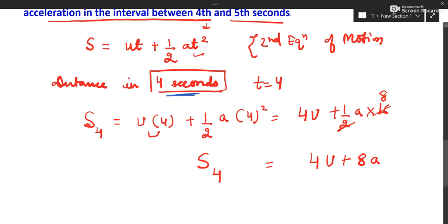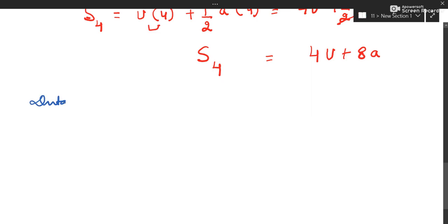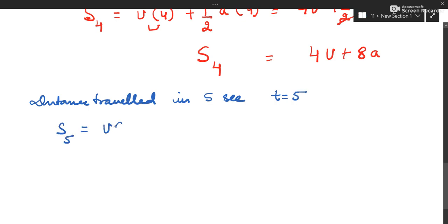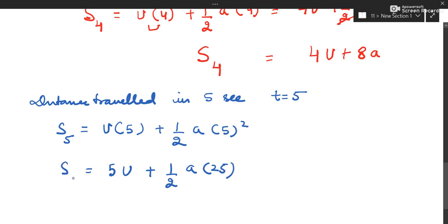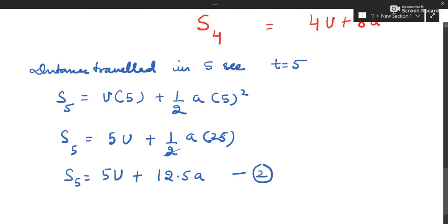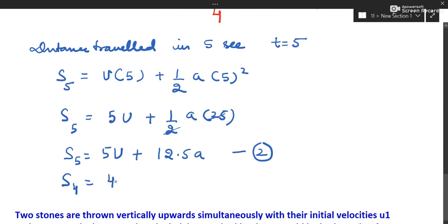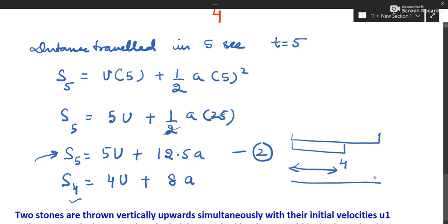Now we find the distance travelled in 5 seconds. Using the same equation with t = 5: s₅ = u × 5 plus half × a × 25, which gives 5u plus 12.5a. This is the distance up to 5 seconds. The distance up to 4 seconds is 4u + 8a.